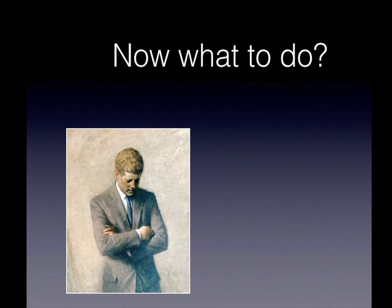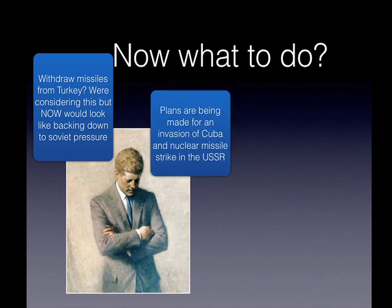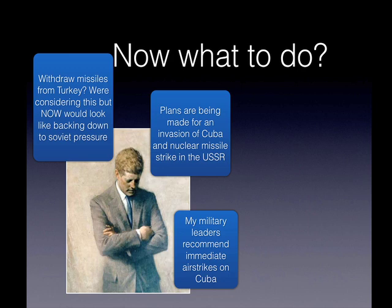Kennedy was in a real dilemma. He certainly didn't want to spark off a nuclear war, and probably Khrushchev didn't either. However, he was at risk of looking weak if he didn't make the right decisions. Withdrawing missiles from Turkey now — with this quid pro quo from the Soviets — would look like the Americans were being forced to back down. Military leaders were drawing up plans for an invasion of Cuba and possibly even a nuclear missile strike on the USSR, and did recommend immediate airstrikes on Cuba.